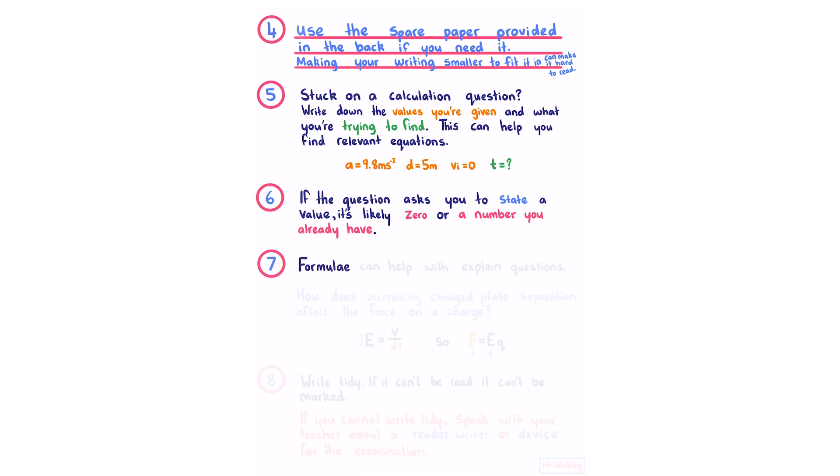Number seven, formulae can help with explain questions. For example, how does increasing charged plate separation affect the force on a charge? Using this equation here we can see that if our voltage is constant, increasing our separation is going to decrease our electric field strength. So our equation for force here shows that if we keep our charge the same and have a reduced electric field strength, our force is going to decrease.